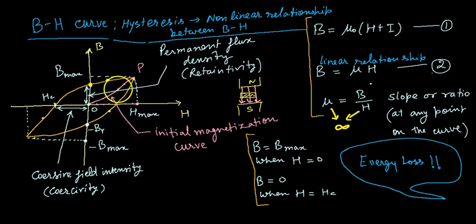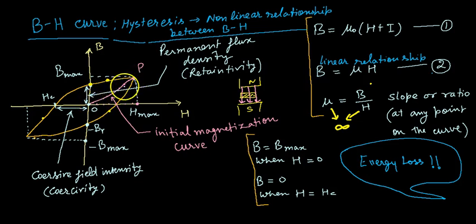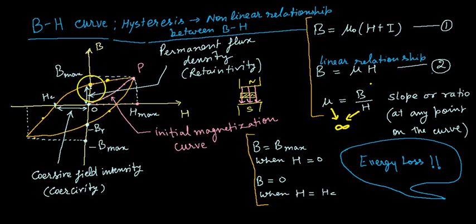When I start to decrease the magnetic field intensity, the material does not follow the same path as the initial magnetization curve. The behavior of the magnetic material follows a different path, and when the external magnetic field intensity is reduced to zero, I still observe some magnetic flux density inside the material.